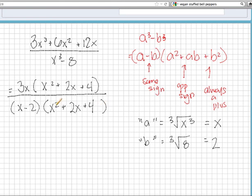So we are in luck. We get a big factor that cancels out, and we are left with 3x over x minus 2. And that is your final answer for this question.